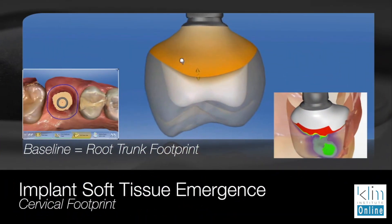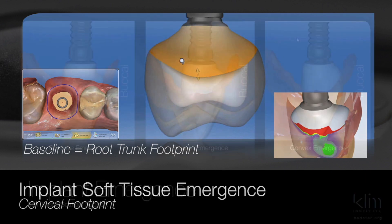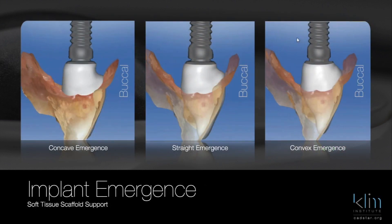They both work extremely well. When designing your sub-gingival emergence, there are several principles we want to look at. A lot of it depends on your biotype. My objective is to avoid food impaction. If we have a thin biotype, we're going to use a concave emergence. If we have a thick biotype — meaning the mucosa is thick — we're going to use a convex. We need to know that when we're going into our sub-gingival design.